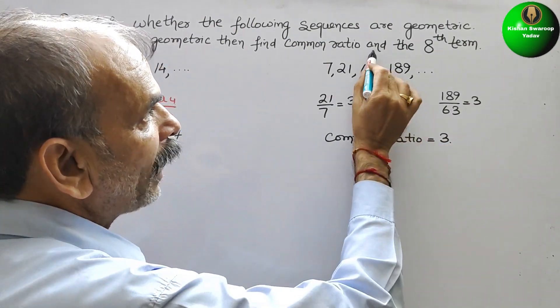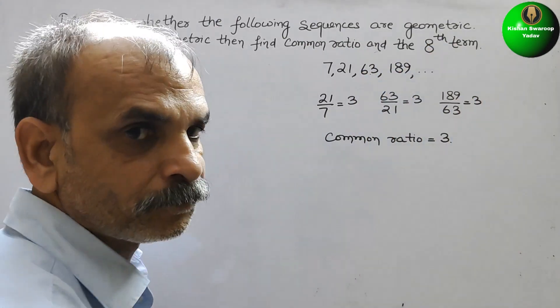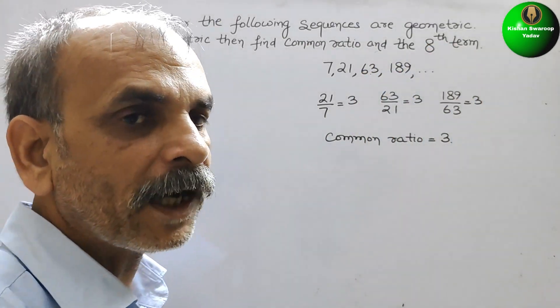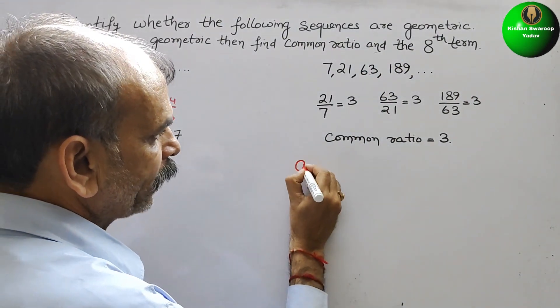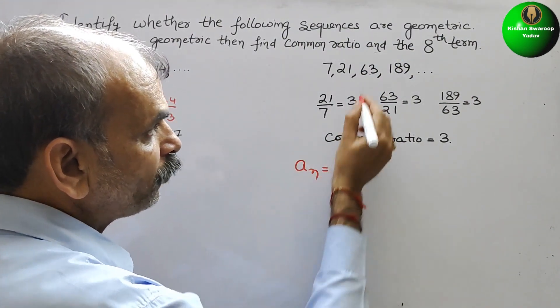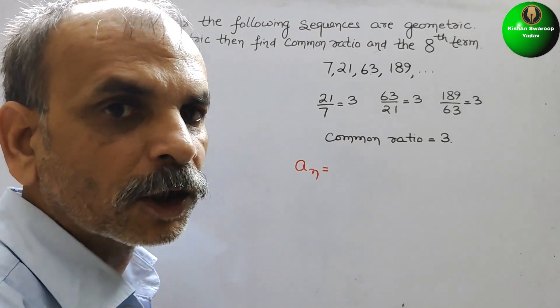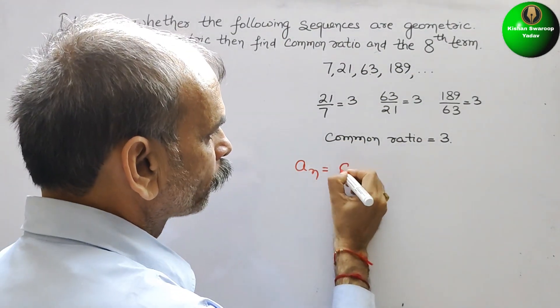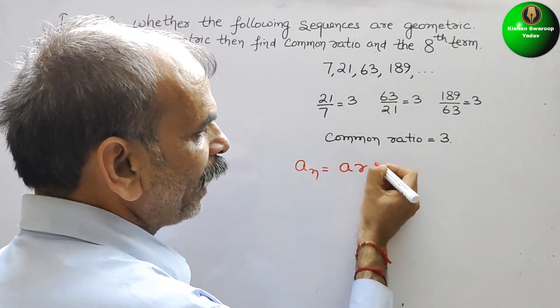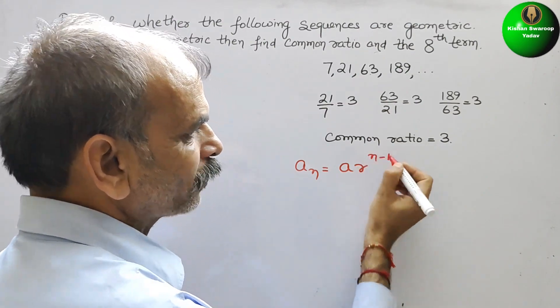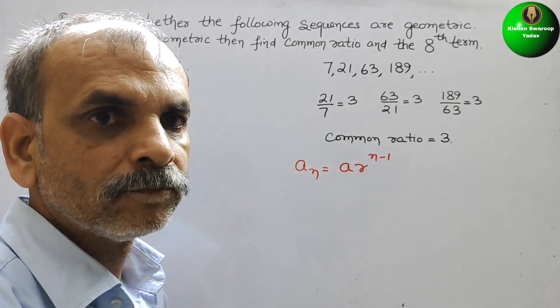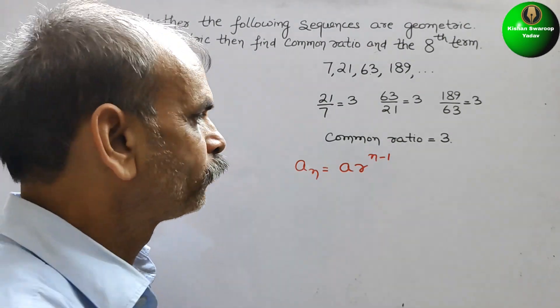Next, they have told find the 8th term. So we will find out An. In GP, the formula is what? A, R, and on R, the power is n minus 1. So now we will go for that.